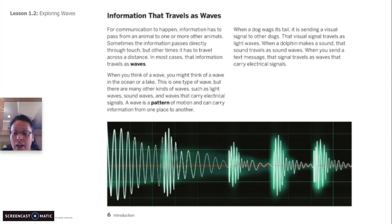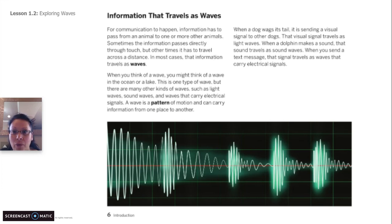When a dog wags its tail, it is sending a visual signal to other dogs. That visual signal travels as light waves. When a dolphin makes a sound, that sound travels as sound waves. When you send a text message, that signal travels as waves that carry electrical signals.